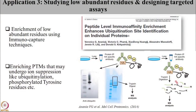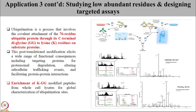Application three is studying low-abundant residues using IPMS. For example, in phosphoproteomic studies using TiO2, only serine and threonine residues are enriched — you would hardly see any tyrosine residues because they are very low in abundance in the proteome and are also very transient in nature. Using an antibody to pull down tyrosine-phosphorylated residues followed by mass spectrometry allows you to confidently identify those tyrosine phosphorylated residues.